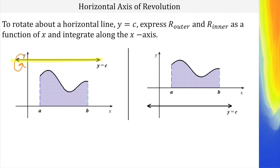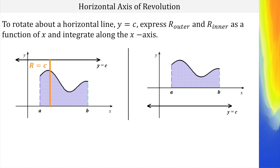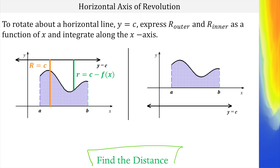The bigger radius is going to be from the axis of revolution all the way to the far side of the area that is being rotated. The length of that distance is the distance from y equals c to the x-axis. To find the little radius or inner radius, we still have this distance all the way to the x-axis, but we have to subtract the height of the function — so that's c minus the height of the function. As long as you're thinking about finding the distance from the axis of rotation, you're going to do great.